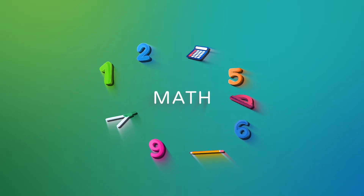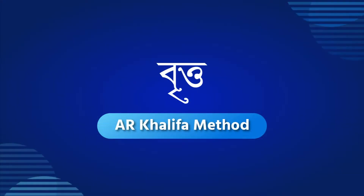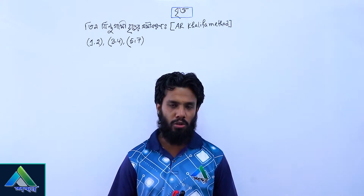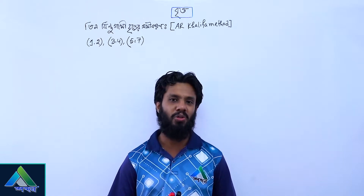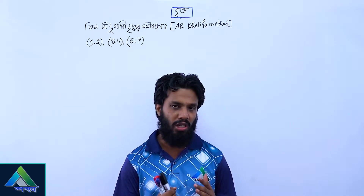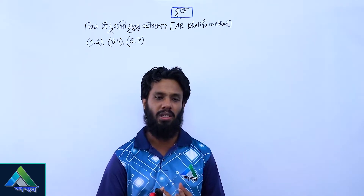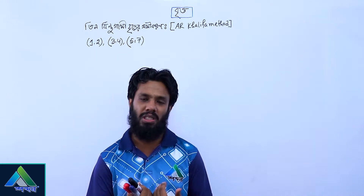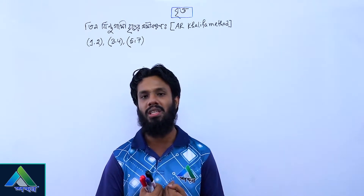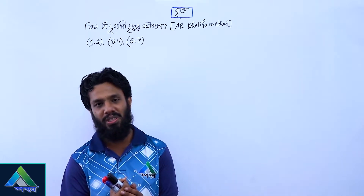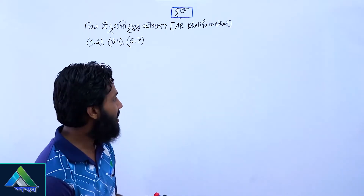What is the problem with the active problem? We have already done an active problem. This problem is the AR-Khalifa method. AR-Khalifa is called Ajiju Rahman-Khalifa. We have known Dr. Ajiju Rahman-Khalifa — he is a professor of the Mathematics Department. What is the AR-Khalifa method?